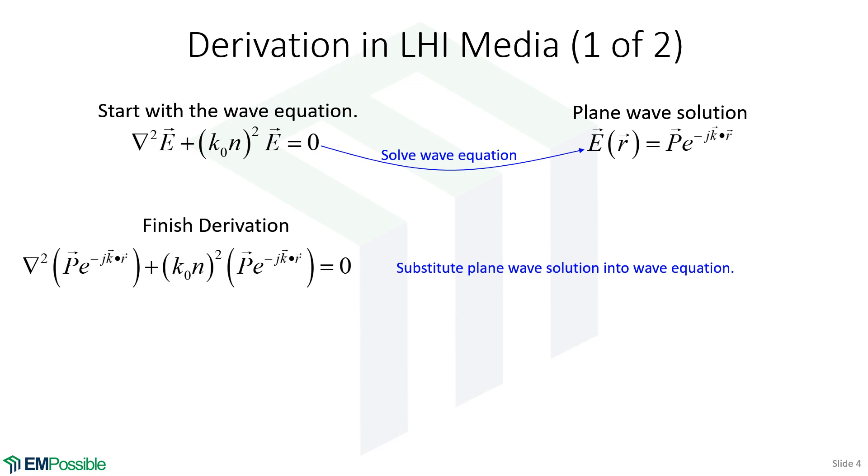And so that's what we've done here. We've just replaced E in the wave equation with our plane wave solution. The polarization term, this P vector, is a constant, so it can come to the outside of this Laplacian operation, and then we can divide both sides by P, so it's gone.